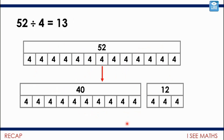And then when we're looking at numbers where we go beyond 10 lots of the number we're dividing by, we're likely to start breaking those numbers down. We gave the example 52 divided by 4. We might split that 52 into 40 and 12, because I know how many 4s are in 40 and in 12. So in total, how many 4s in 52? There are 13.